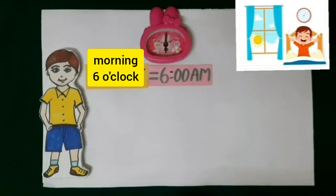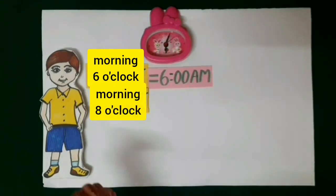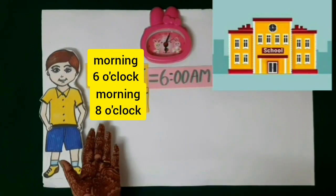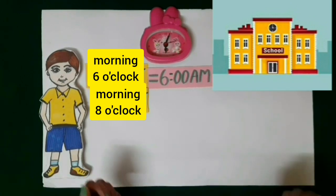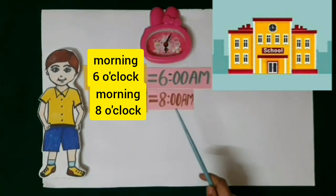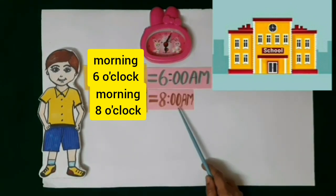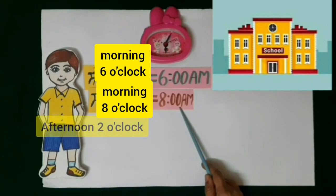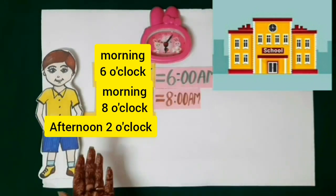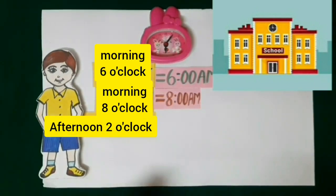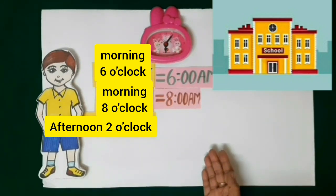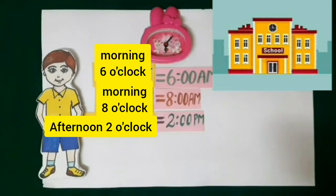After taking bath, he goes to school at 8 o'clock, so we write 8 o'clock in the morning as 8 a.m. The school closes at 2 o'clock in the afternoon. We write p.m. for afternoon time, so 2 o'clock afternoon is written as 2 p.m.